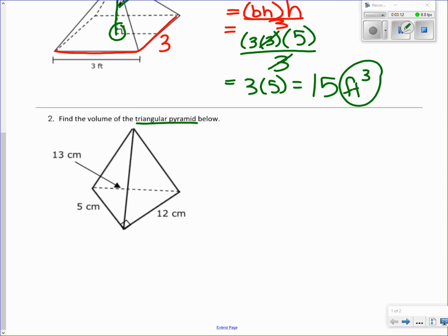So again, our volume formula is the same: big B times height, so area of the base times the height of the pyramid divided by three. So now we're going to substitute in for big B what the formula is for a triangle, and so that is base times height divided by two, and then we have times height of the pyramid, all of that divided by three.